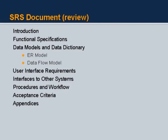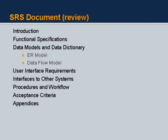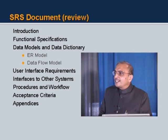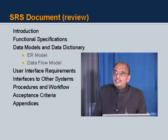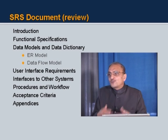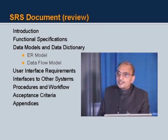This is the review of an SRS document. The document would generally have an introduction and functional specifications. It will then have data models and an associated data dictionary — the data models could be an ER model or an object model. It would have a data flow model. The ER model captures the static characteristics of data and their interrelation, while the data flow model defines the dynamics of how data moves across the organization and is transformed. Additionally, there are user interface requirements, interfaces to other systems, and procedures and workflows. Acceptance criteria must be defined right at the time of system requirement specification, so that whoever develops the software knows exactly how it will be accepted.